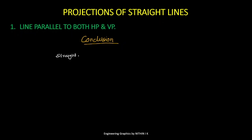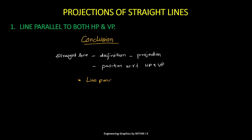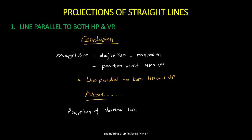To summarize: we discussed the definition of a straight line, projection of a straight line, and the positions of straight lines with respect to the principal planes HP and VP. The first position — line parallel to both HP and VP — has been discussed in detail. The next video will cover the projection of a vertical line: first case, line perpendicular to HP and parallel to VP; second case, line perpendicular to VP and parallel to HP.